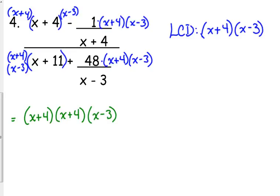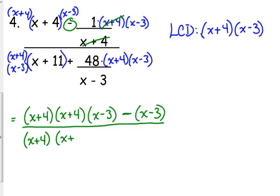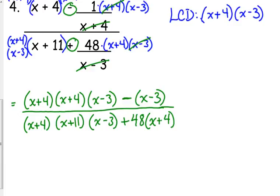x plus 4 times x plus 4 times x minus 3. Don't lose that negative in there. The x plus 4 is canceled here, so then we've got x minus 3. Over in the bottom, didn't have a denominator, so x plus 4 times x plus 11 times x minus 3. Don't lose the plus. The x minus 3 is canceled, so we have 48 times x plus 4. Now, we're going to have a little bit more multiplying on this one, but let's see if we can make life just a little bit easier.